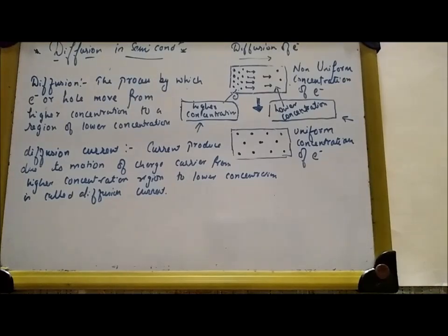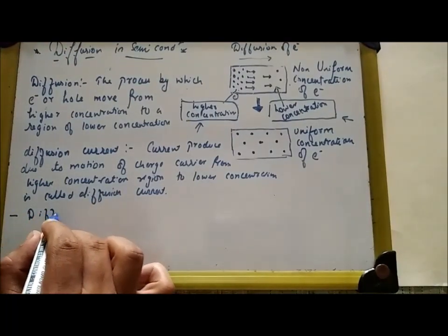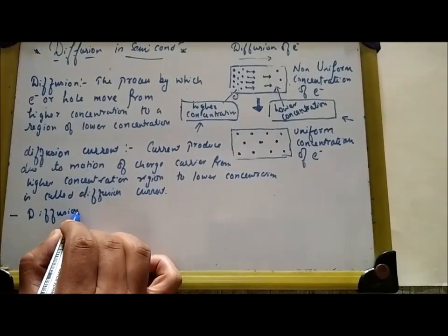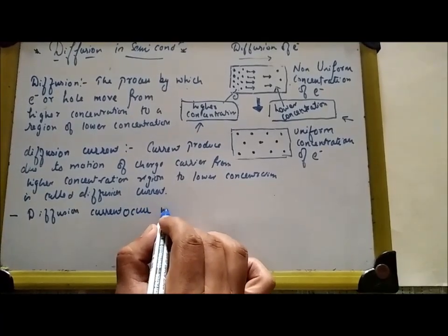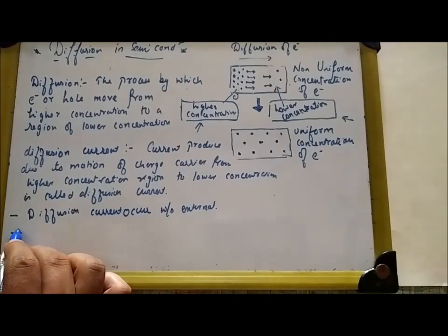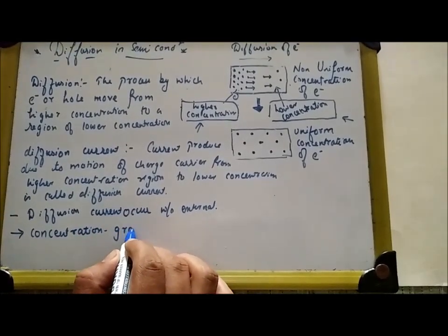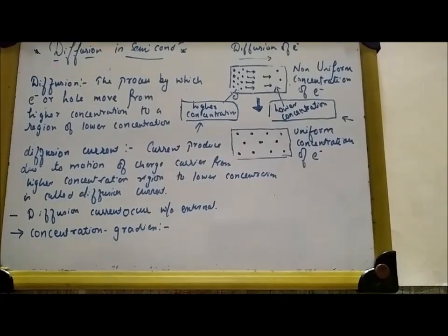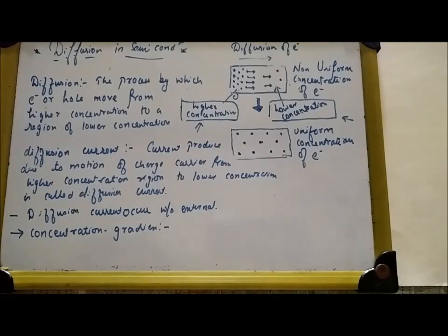An important point: diffusion current occurs without an external field. In conductors, an external field is required, but diffusion current in semiconductors occurs without any external field. Now, what is meant by concentration gradient? Concentration gradient means the difference in the concentration of electrons or holes in a given area.